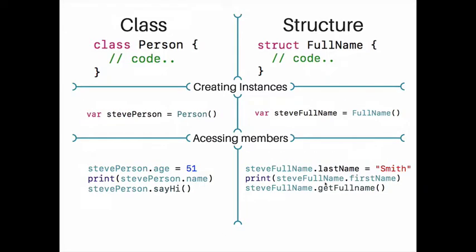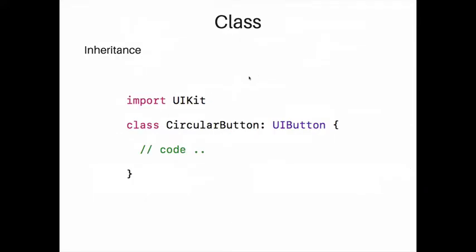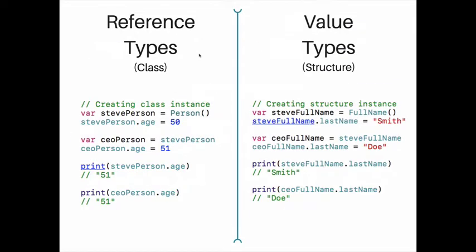We can conclude that classes and structures are basically the same, besides the inheritance part that classes support and structures do not. Internally, classes and structures are managed differently — classes are reference types and structures are value types. We can see this difference in code.